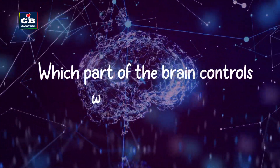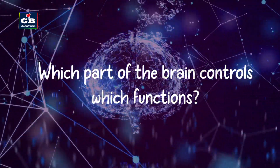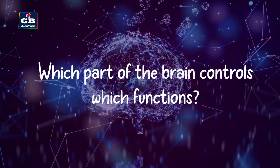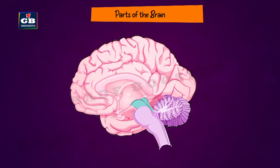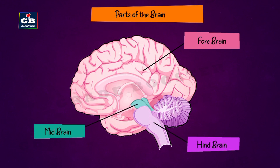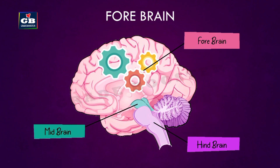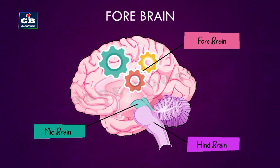The brain has three main parts: the forebrain, midbrain, and hindbrain. The thought process takes place in the forebrain.